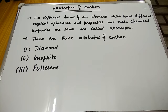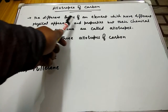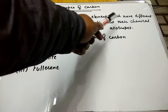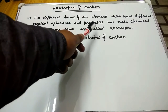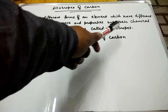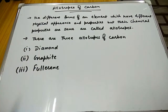Let us see what are allotropes of carbon. First, let us see what exactly allotropes are. Different forms of an element which have different physical appearance and properties but whose chemical properties are the same are called allotropes.